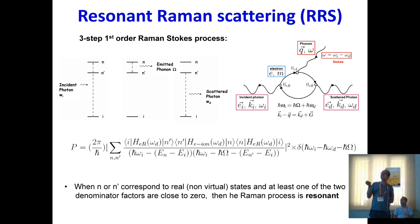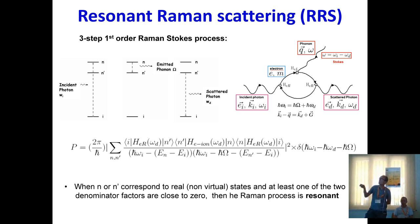In a Raman process, the incident photon is absorbed between the initial state and a virtual or real electronic state — so electrons are involved. Then a phonon is emitted (Stokes process), and the light relaxes from that state back to the initial state. This is a three-step process represented by a Feynman diagram involving energy and momentum conservation, electron-radiation coupling, electron-phonon coupling, and again electron-radiation coupling.